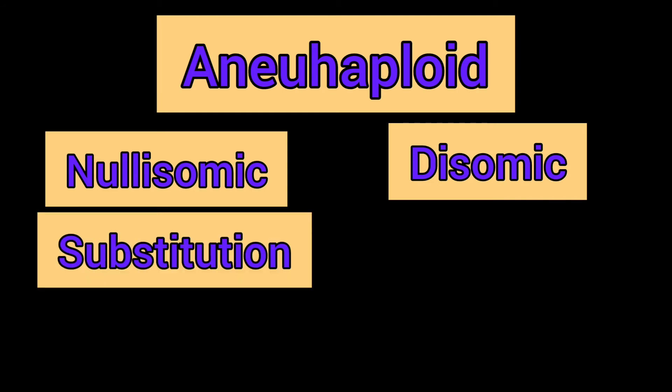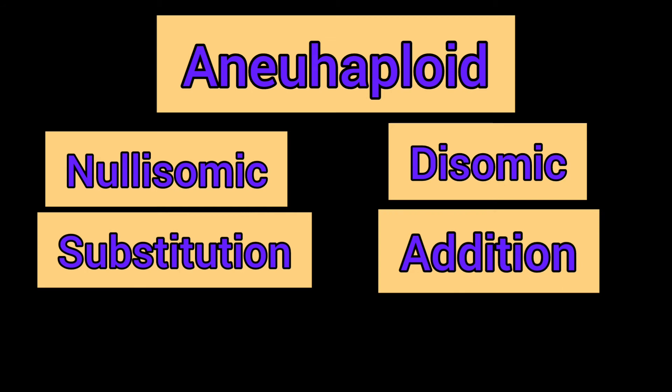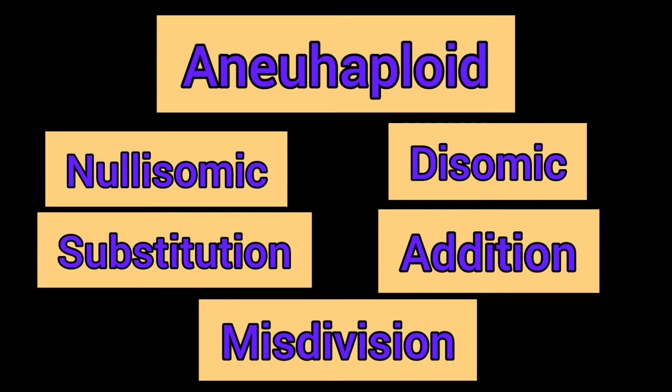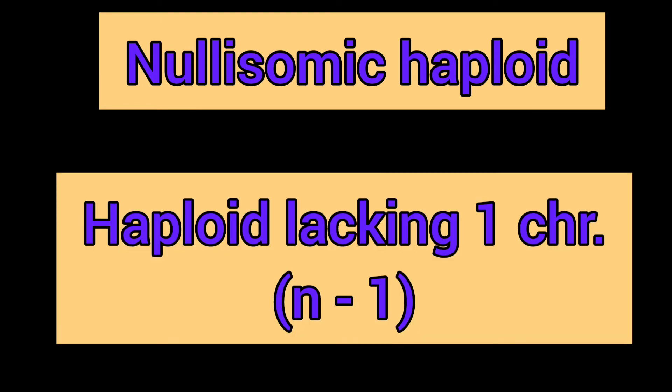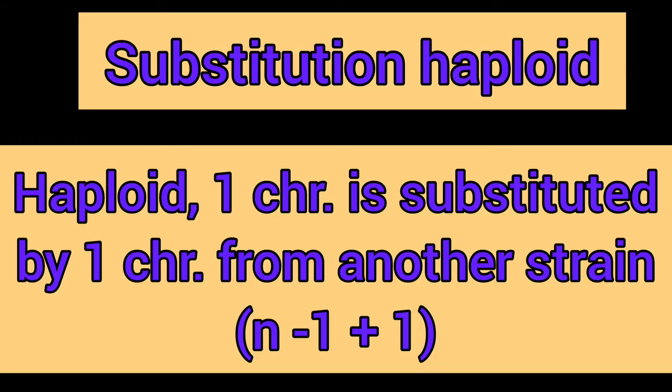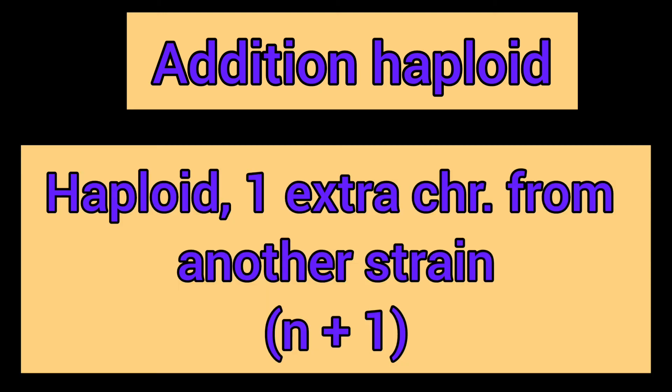The five types of aneuhaploids are: nullisomic haploid, disomic haploid, substitution haploid, addition haploid, and misdivision haploid. A nullisomic haploid is a haploid lacking one chromosome, represented as n minus one. A disomic haploid has one extra chromosome, represented as n plus one. A substitution haploid is one in which one chromosome is substituted by one chromosome from another strain.